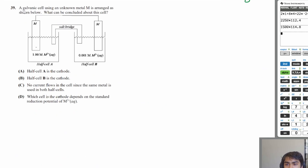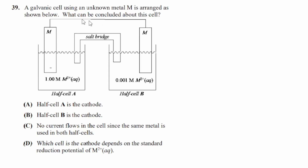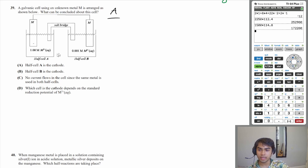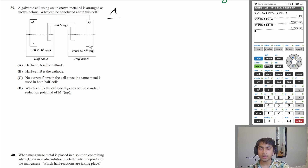Let's move on to question 39. A galvanic cell using an unknown metal M is arranged as shown below — what can be concluded about the cell? So this cell is a concentration cell, which is a cell that uses the same metal but varying concentrations of the metal in each half-cell. Let's break this down and see what's happening at cell A.